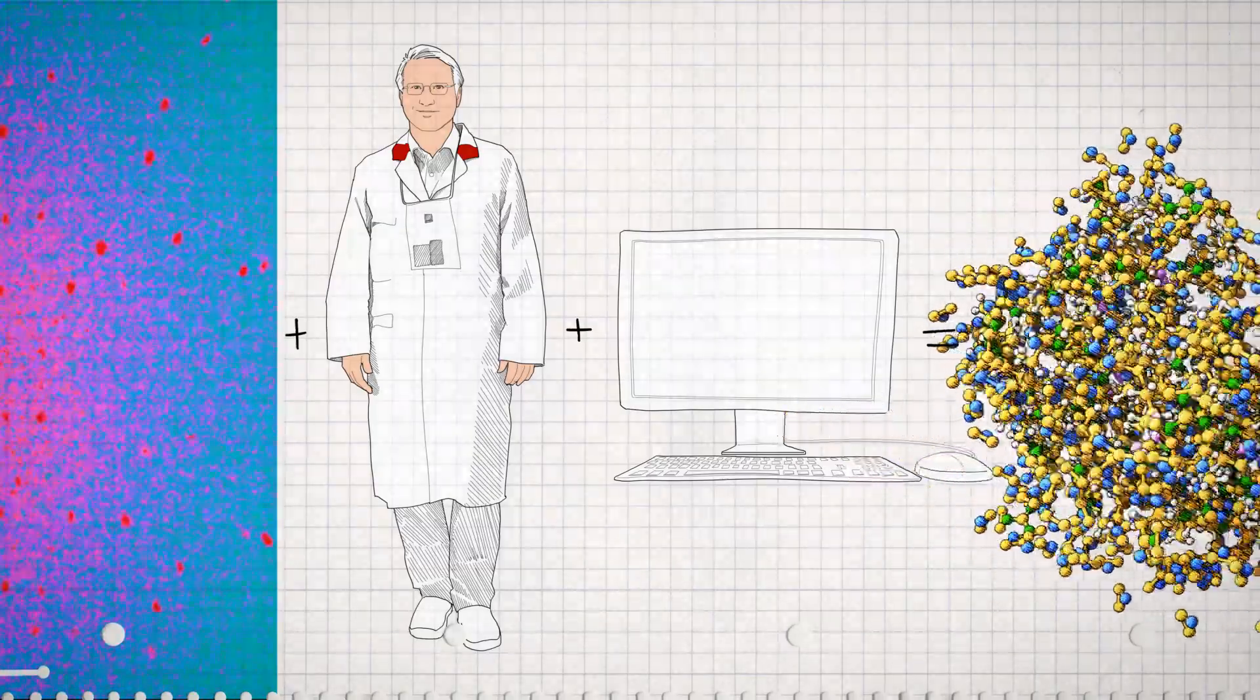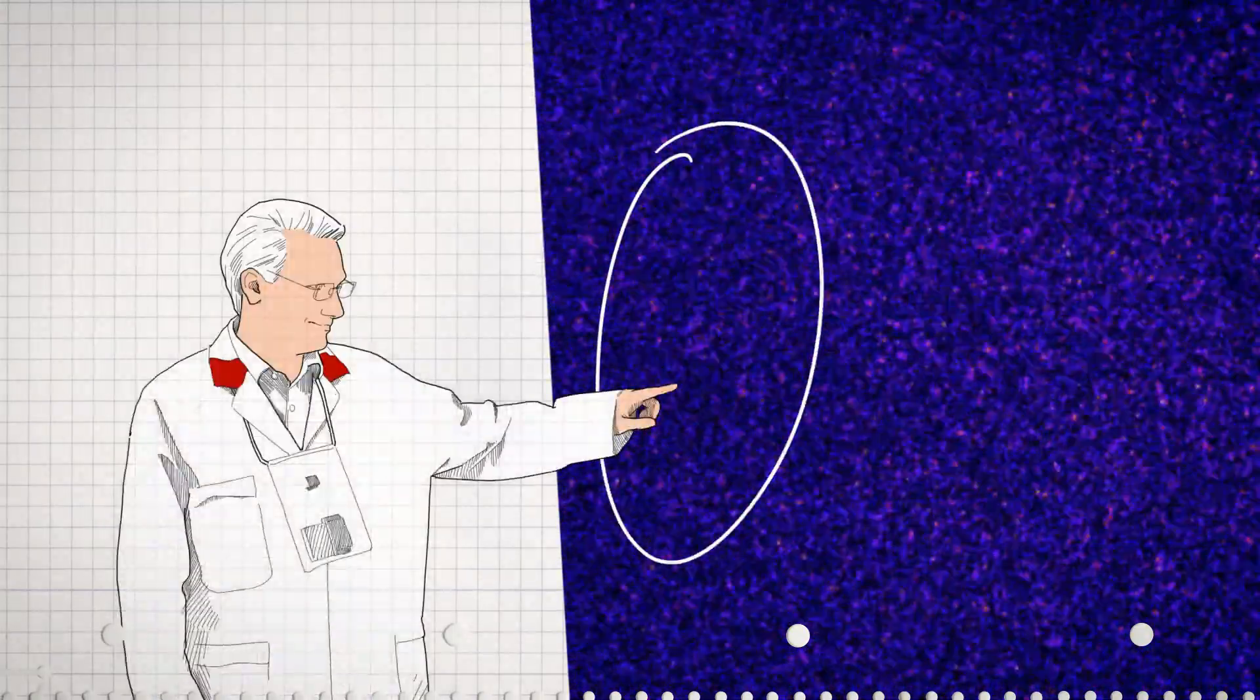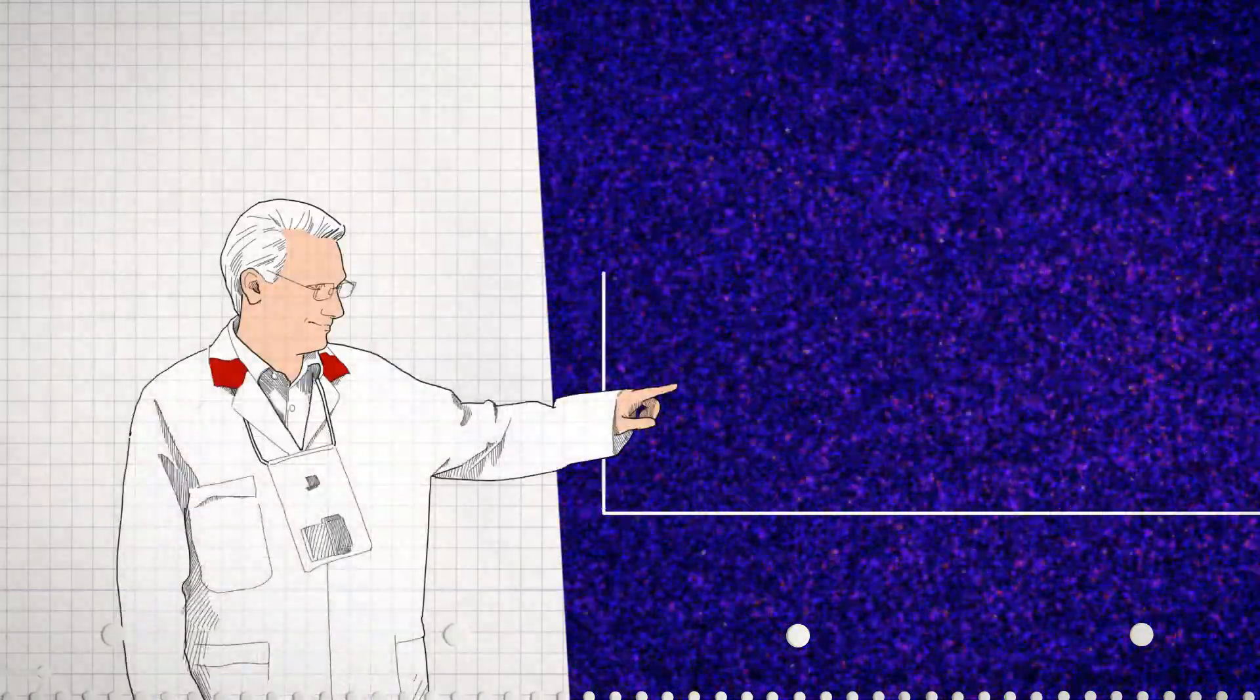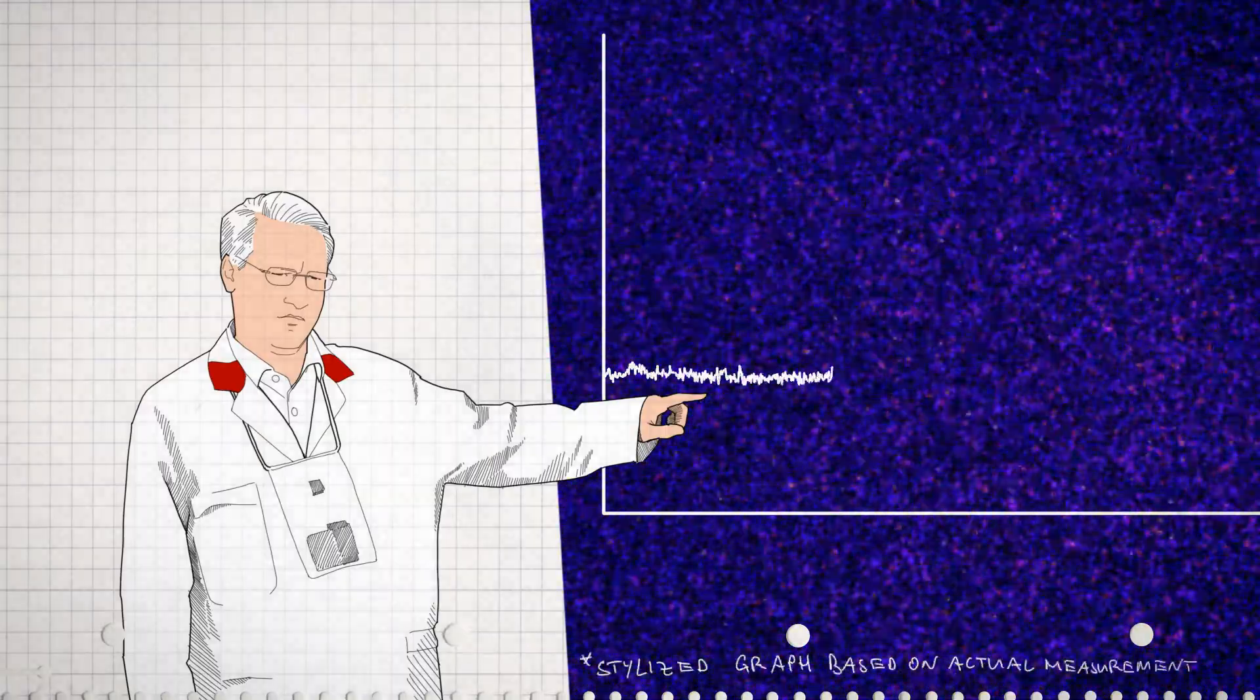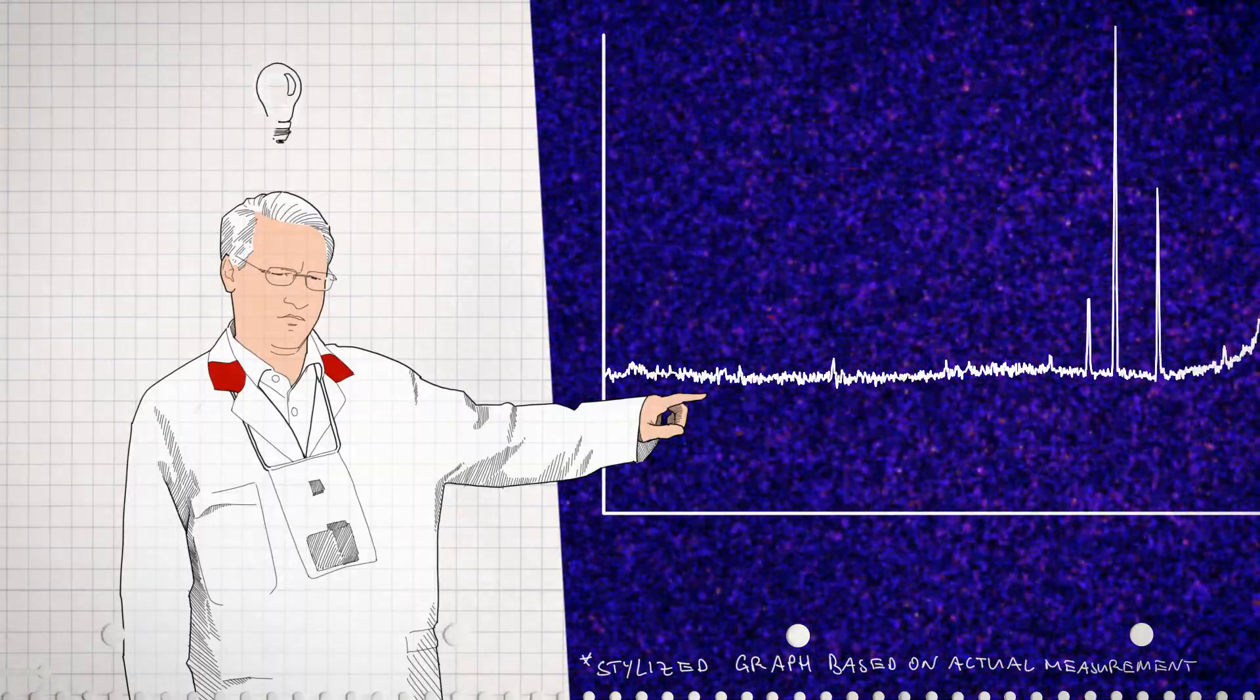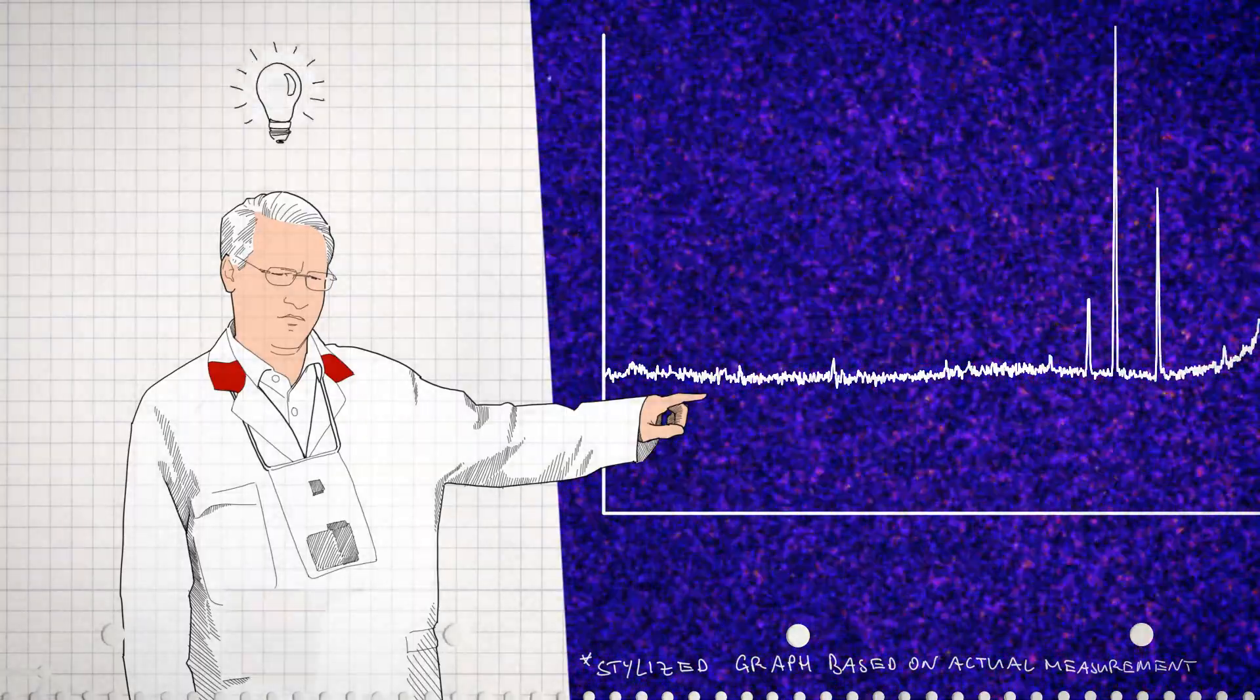But what about the neutrons not involved in Bragg scattering? They make up the largely uniform background scattering. With certain types of samples, the background signal is rather strong, almost drowning out the Bragg peaks. To improve on this result, it's important to understand the cause of the background scattering.